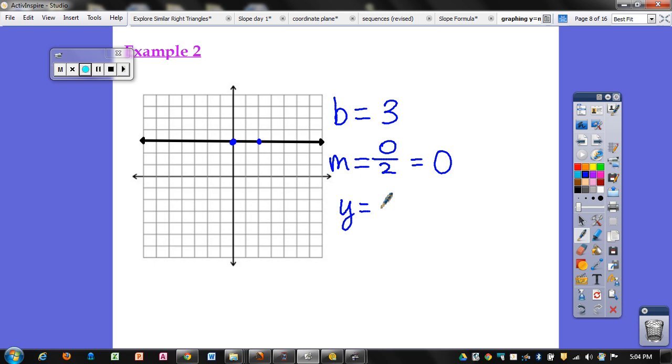I have both my values, so I can plug them into my formula, or my equation. Y equals mx plus b. Instead of m, I'm going to put in 0, and then positive 3. Now, since 0 times any number is just 0, you don't have to actually write this part. You would just write it as y equals 3. And that's your equation for this line right here.